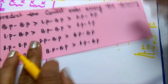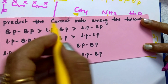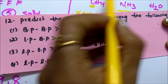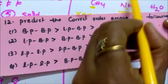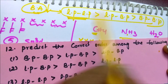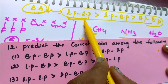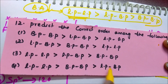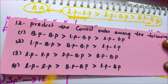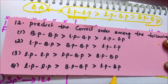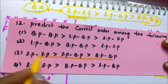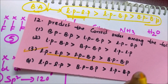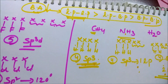For the next question — predict the correct statement — we just discussed that according to VSEPR theory, lone pair–lone pair repulsions are greater than lone pair–bond pair, which are greater than bond pair–bond pair repulsions. The third option is the correct answer.